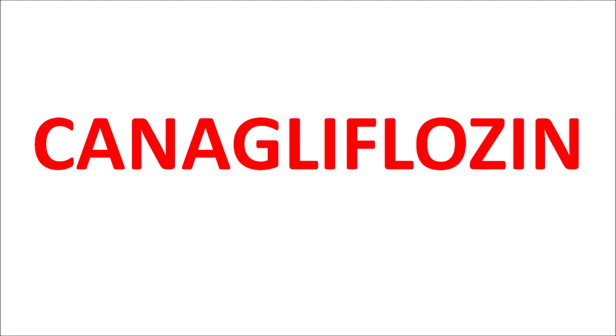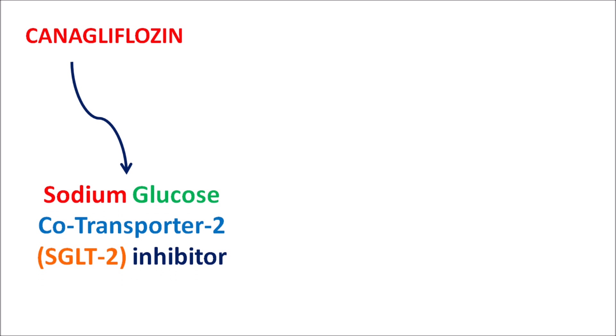Today let us discuss canagliflozin. The suffix '-gliflozin' indicates this drug is going to inhibit the flow of glucose into the systemic circulation. This drug is one of the sodium glucose co-transporter 2 (SGLT2) inhibitors. SGLT2 is a co-transporter responsible for absorption of both sodium as well as glucose within the renal tubules, and such transporter is going to be inhibited by canagliflozin.